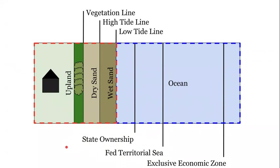Once states had developed coastal management plans, they were given rights over state interests in coastal areas including state waters, and it defined what it meant in terms of the federal government prioritizing its activities in federal waters relative to state waters. We're going to get into more definition of state ownership of submerged land — where it comes from, where it ends — and then federal ownership and where these rights interact.